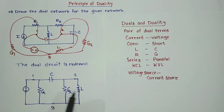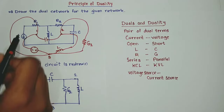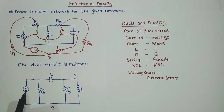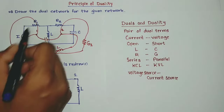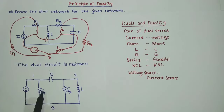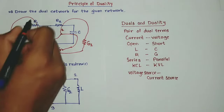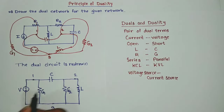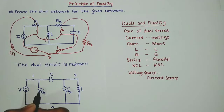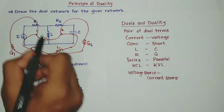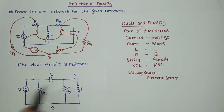So here is the dual for our given network. You can observe that series is replaced by parallel. The current source is replaced by voltage source — previously it was in series with a resistor, and now this voltage source is in parallel with a conductance. Likewise we can draw the dual for any circuit.